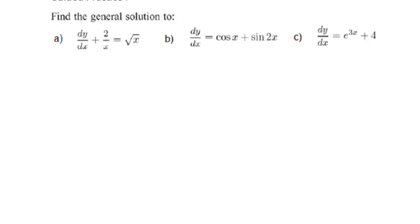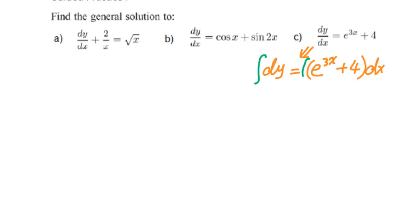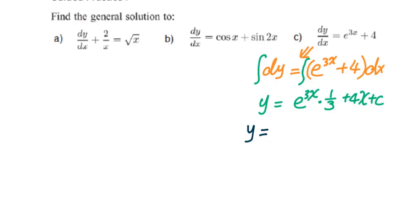For part c, multiply dx both sides. You get dy equals (e to the 3x plus 4) dx. Then integrate both sides. You get y equals e to the 3x times 1/3 plus 4x plus c. Reorganized: y equals (1/3)e^(3x) plus 4x plus c.